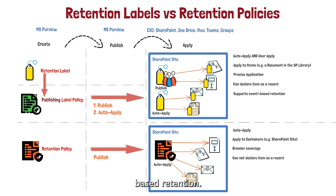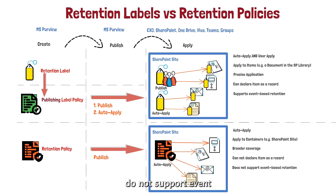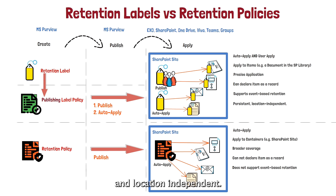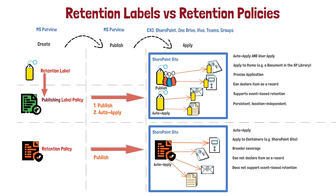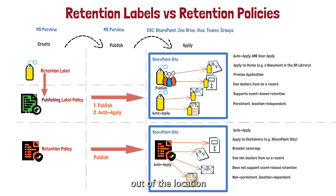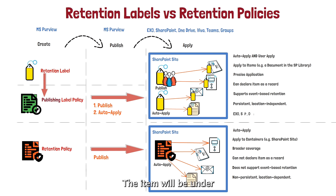Retention labels support event-based retention — a short example would be when a project is closed or an assignment is complete. Retention policies do not support event-based retention. As you can see, retention policies are less versatile. Retention labels are persistent and location-independent. This means that if the label is applied to an item and then the item is moved, the label stays with the item regardless of its new location. Retention policies, on the other hand, are location-dependent. This means that if an item is moved out of the location to which a retention policy was applied, the item is no longer subject to that retention policy. Remember, the retention policy is applied to the container. The item will be under the retention policy that exists in the new location, if there is any.